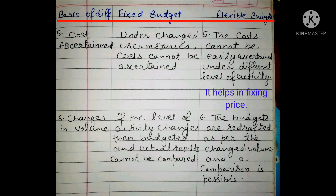The sixth point is changes in volume. Under fixed budget, if the level of activity changes, then the budgeted and actual results cannot be compared. Whereas under flexible budget, the budgets are redrafted as per the changed volume, and a comparison is possible.